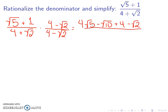On the denominator, the first terms, 4 times 4 is 16. Outside terms gives me minus 4 square root of 2. The inside gives me 4 square root of 2. And then the square root of 2 times the square root of 2 is 2.